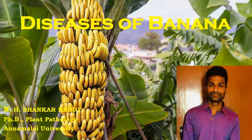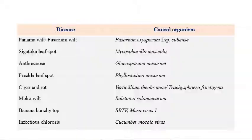Diseases of banana. The scientific name of banana is Musa species. My name is NH Shankar Reddy and I am doing a PhD in Plant Pathology at Annamalai University. Now we will see the list of important diseases in banana.